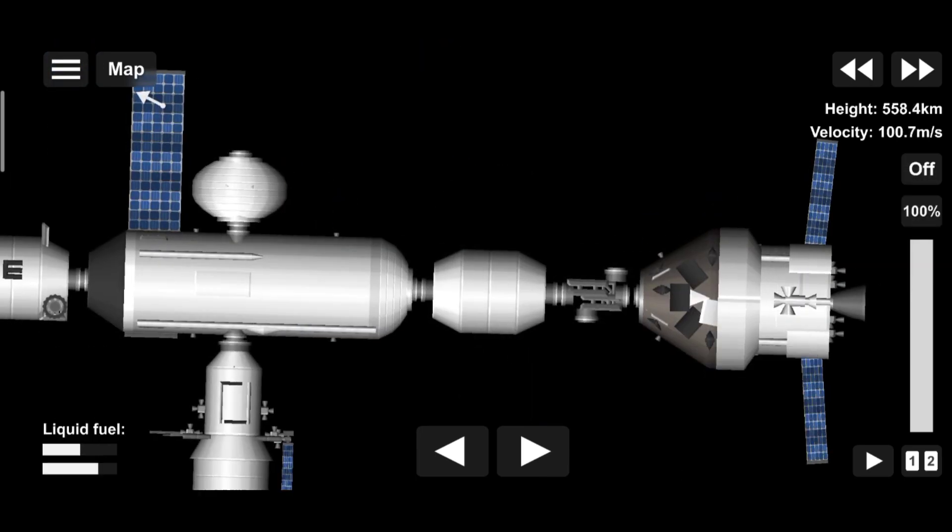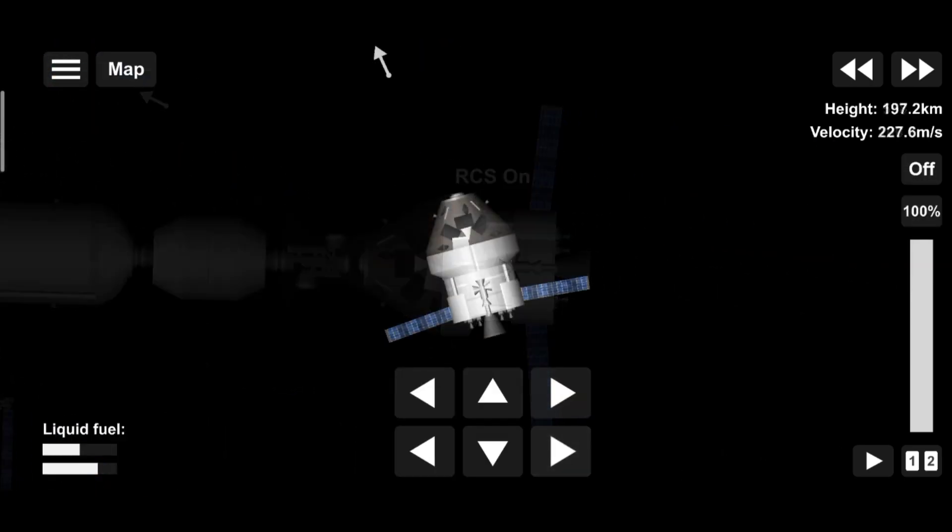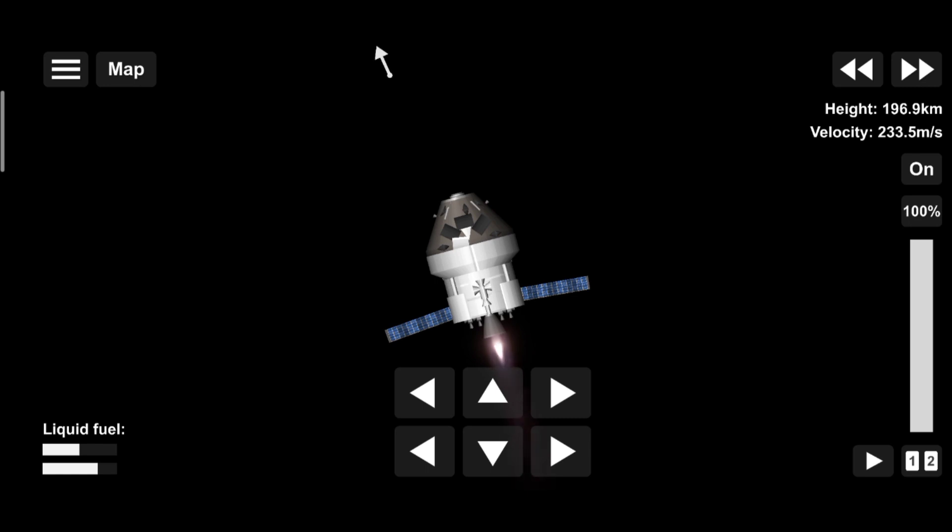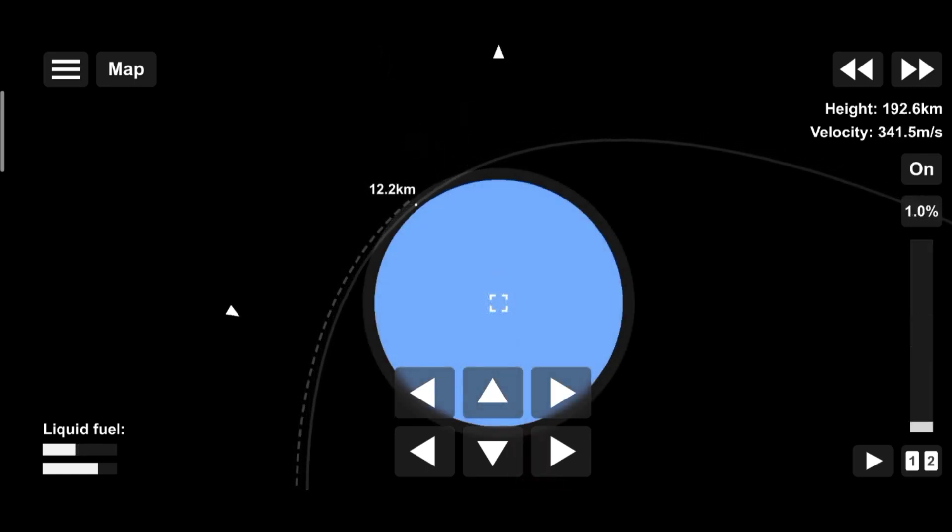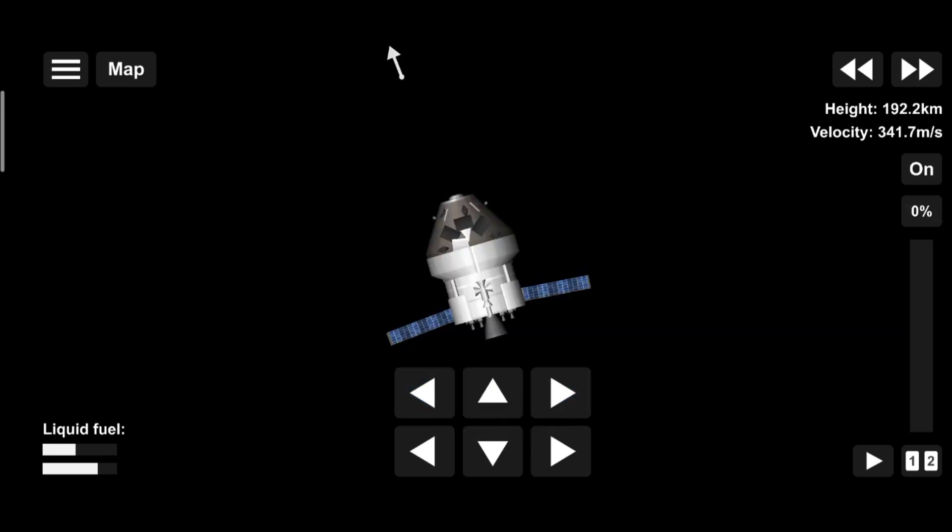Once back aboard the Orion spacecraft and undocked from Gateway, the crew fire their engine once to break out of the halo orbit, and once again to sling the spacecraft around the Moon, placing it on a multi-day trajectory back towards Earth.